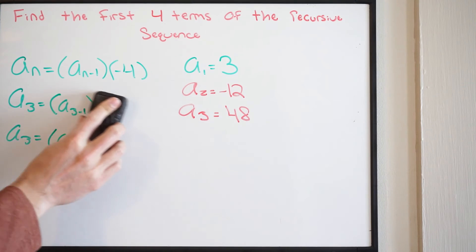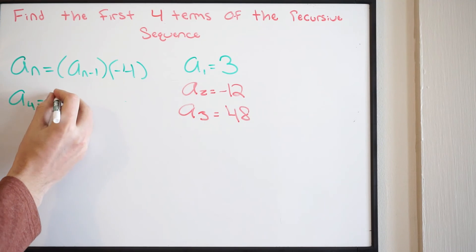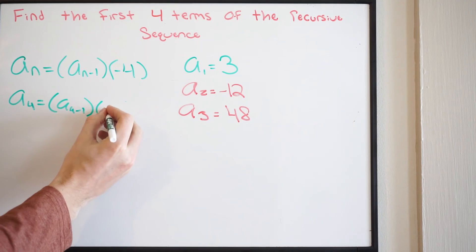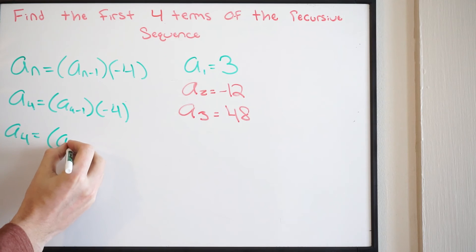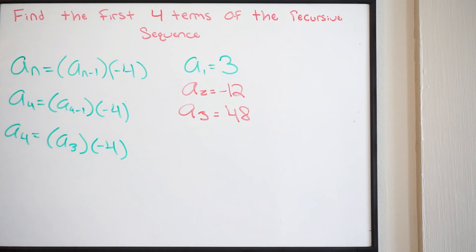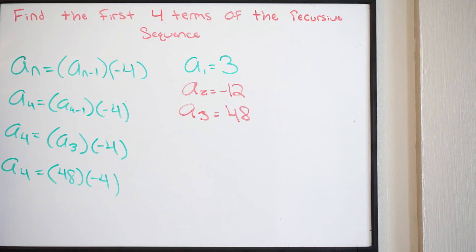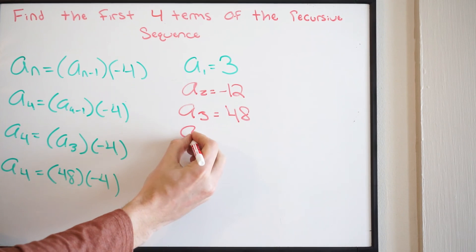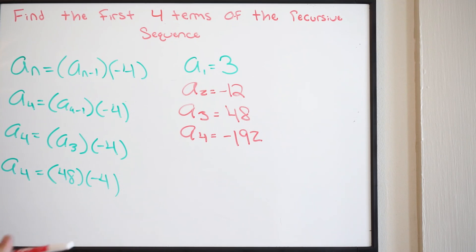Let's find that last term. Plugging A of 4 in for our variable, we get A of 4 equal to A of 4 minus 1 times negative 4. That simplifies to A of 3 times negative 4. We know A of 3 is 48, so A of 4 equals 48 times negative 4, which is negative 192. So here are our first four terms of the recursive sequence, and that is it.